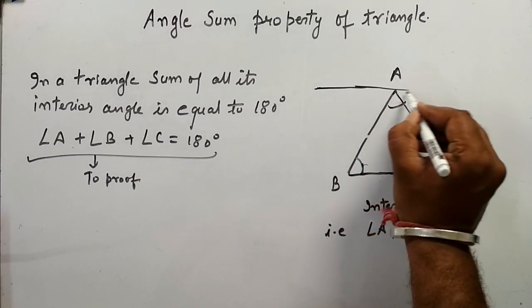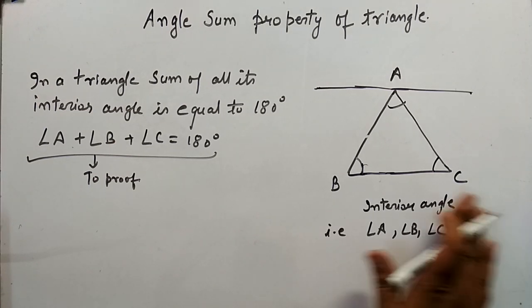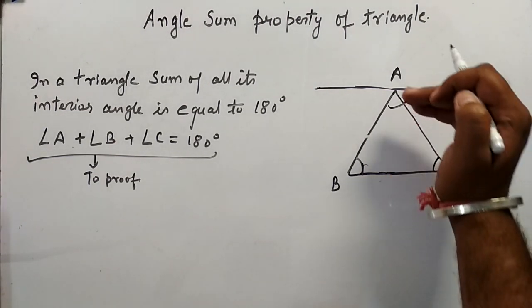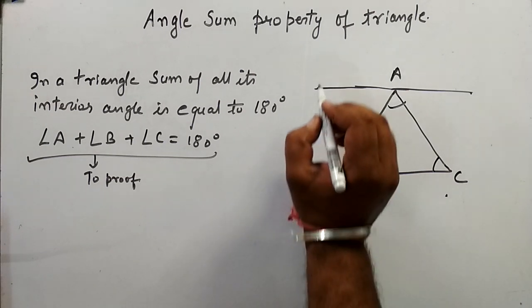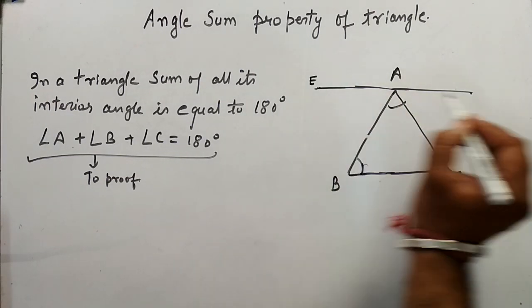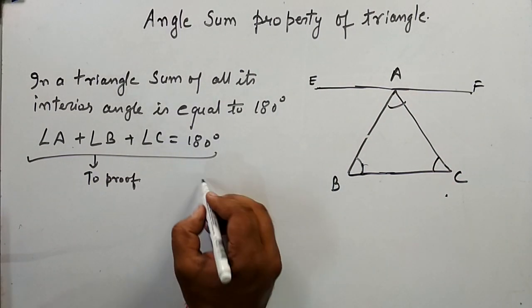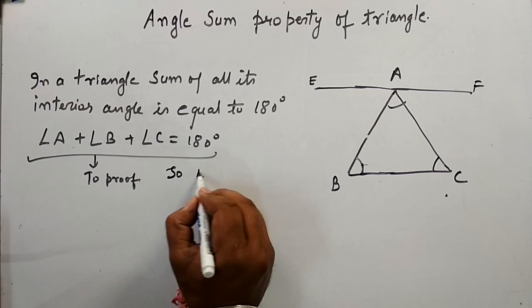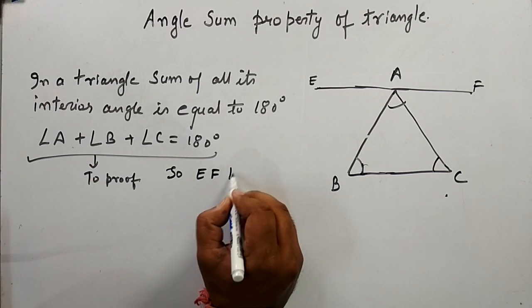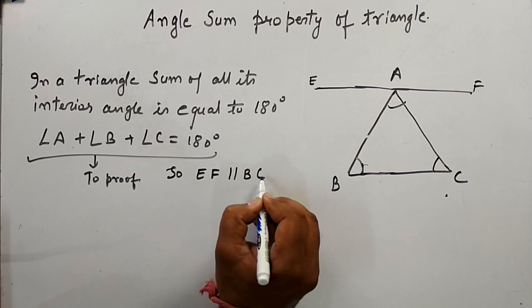So this is the line which is parallel to BC and which passes through the vertex A. We are naming this as EF. So EF is the line that is parallel to BC.